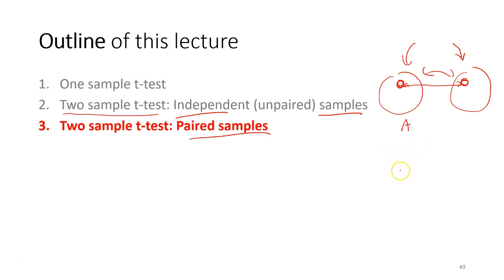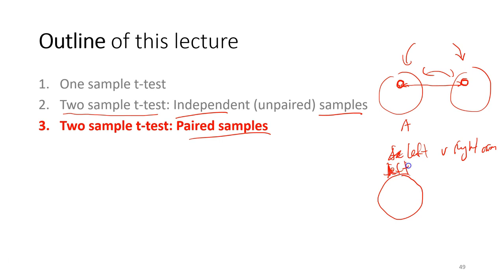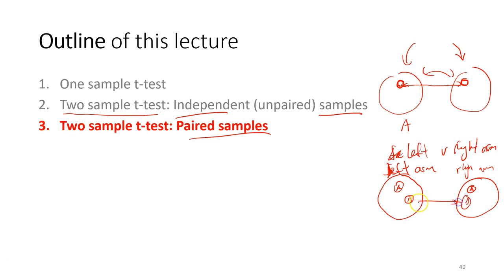However, in some cases we have paired samples. For example, if we want to compare the left and right arm length of students, we have a population of left arm measurements and right arm measurements. Each measurement is taken from the same student. For taller students we get longer left and right arms compared to shorter students — these are the same students, so the explanation units are not independent from each other between the groups. We need to use the paired sample t-test.